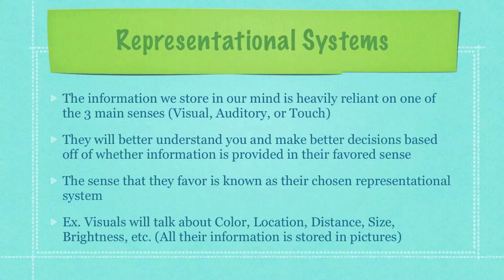For example, visuals will talk about color, location, distance, size, and brightness. The reason is all of their information is stored in their brains in the form of pictures. They literally re-see what happened for a split second right before they make a decision. Others might remember something they were told, or actually re-enact a whole event over and over again. Those are your feeling or touch — or kinesthetic, if you want to use the jargon term — type of people.